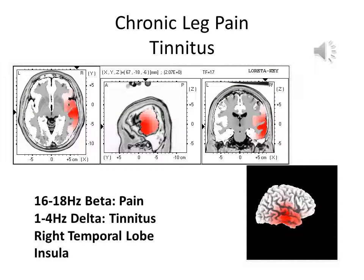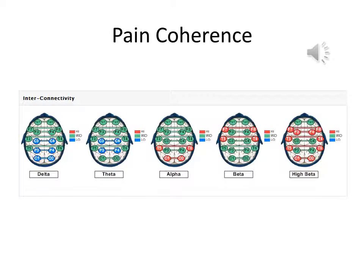This slide shows the same client's Loretta map, with both elevated beta and theta in the right hemisphere. Temporal lobe beta hypercoherence is also typical with pain, and likely reflects insula dysregulation.